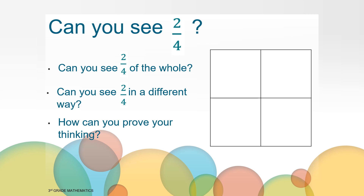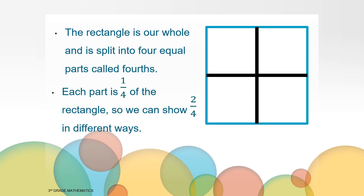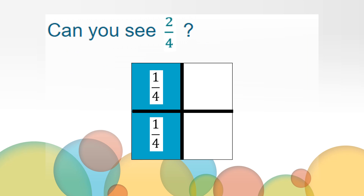Look at this same image, but this time I'm wondering if you can see two fourths. Can you see two fourths of this whole? Can you see two fourths in a different way? How can you prove your thinking? I'll give you a moment to think about those questions. Just like before, the rectangle is our whole and is split into four equal parts called fourths. Each part is one fourth of the rectangle. So we can show two fourths in many different ways. One way you might have seen two fourths is on the left side like this.